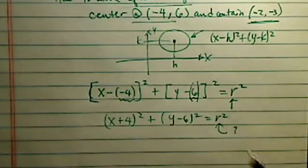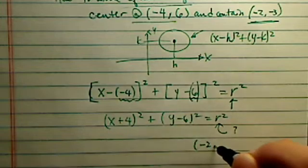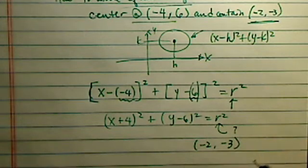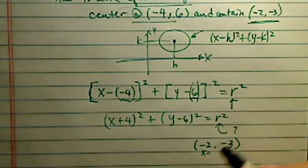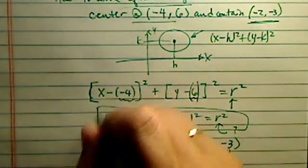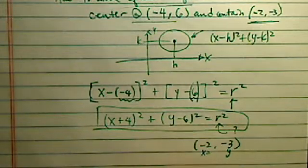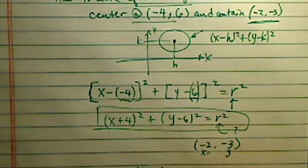Well, we're given one more clue in that it contains the point minus 2, minus 3. So when x equal to minus 2, y equal to minus 3, we should be able to substitute it into this equation because it fits on a circle. Okay, so minus 2 minus 4 squared plus minus 3 minus 6 squared equal to r squared.